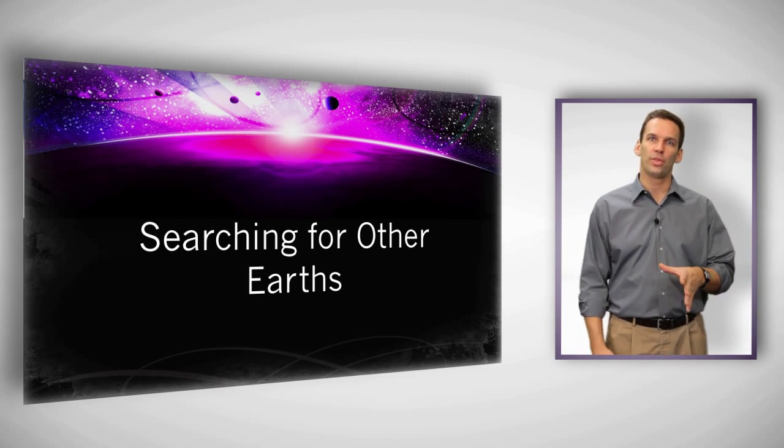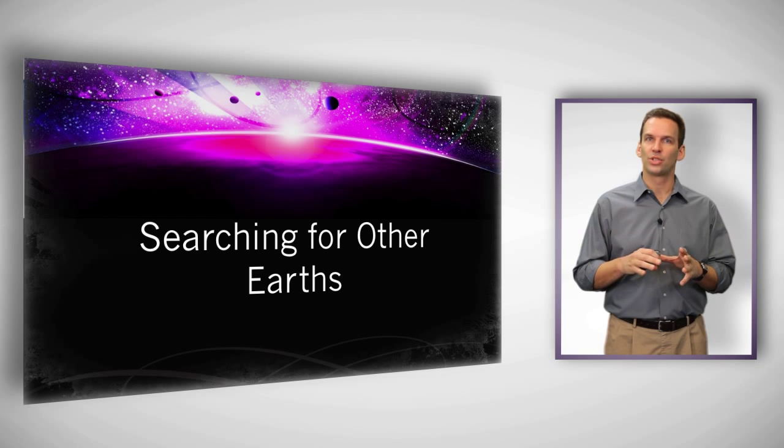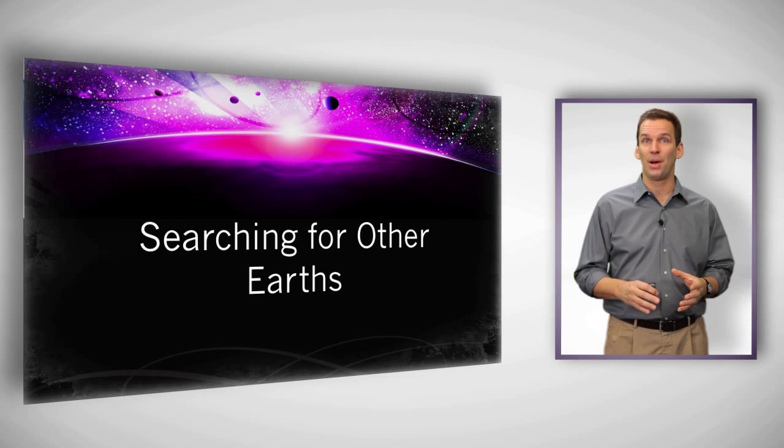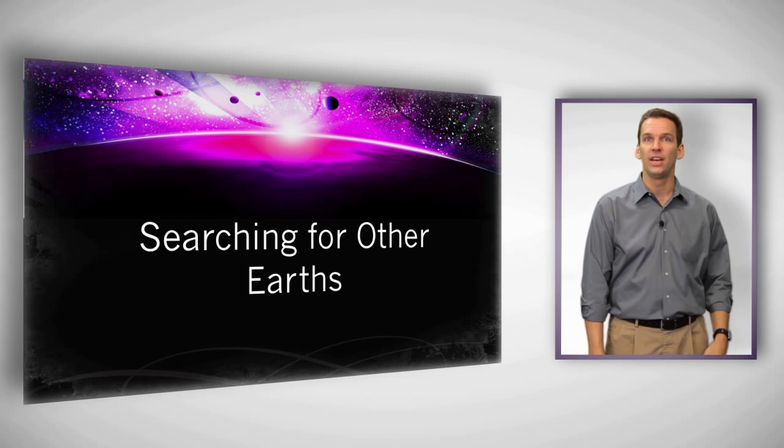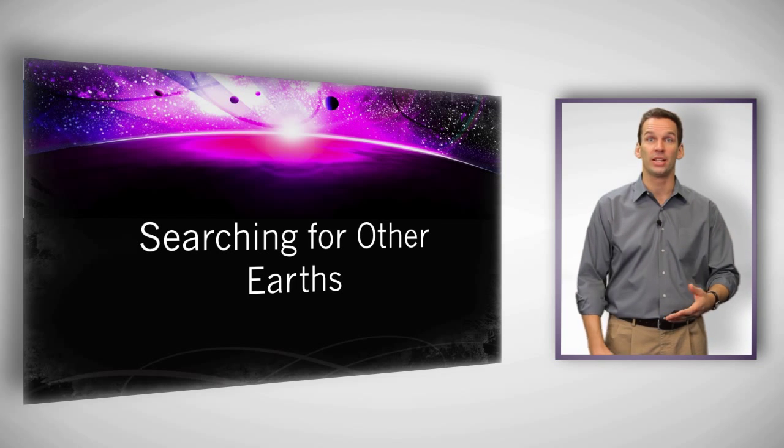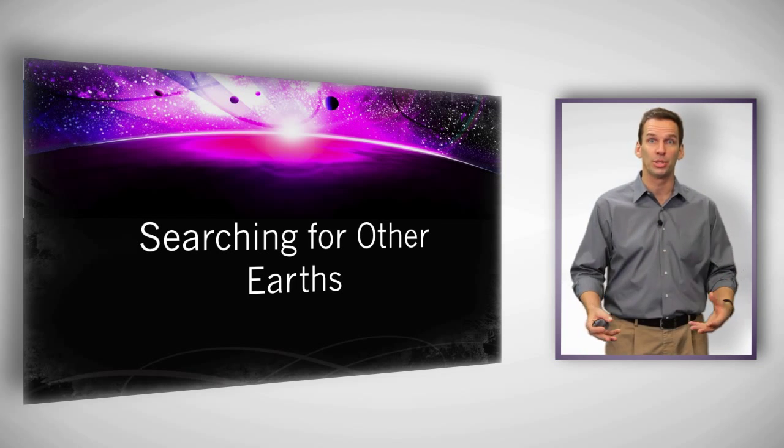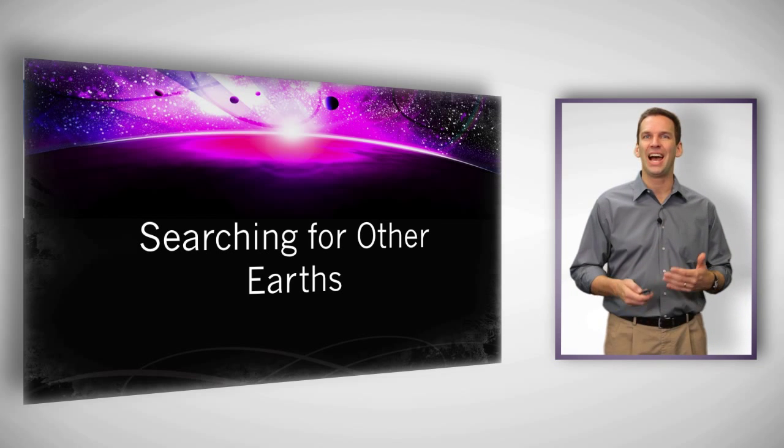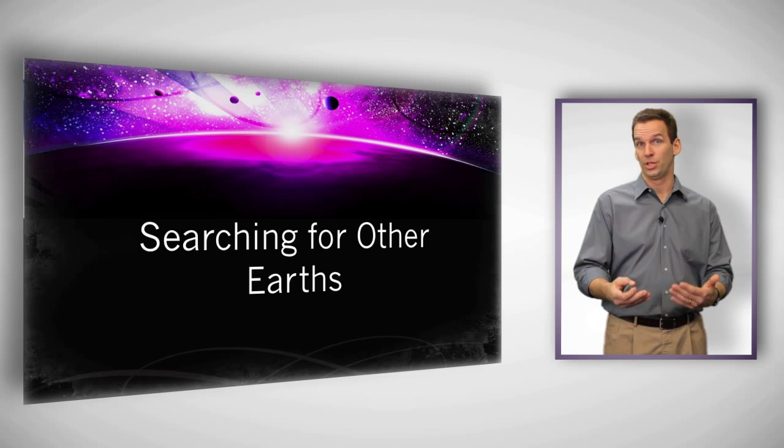And I thought it would be worthwhile to kind of survey, what does our solar system look like? What do planets in our system tell us about the expectation of finding life? And as we find out about these increasing number of rocky planets, and even some that are going to be in the habitable zone, some that may even have water on them, how do we think about them, and how does that impact the Christian faith, and whether this is any sort of argument against the Christian God?